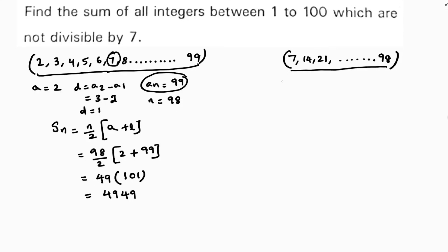Now here in this series, a is 7, d is also 7. a2 minus a1 is 14 minus 7, which is 7. an is 98.